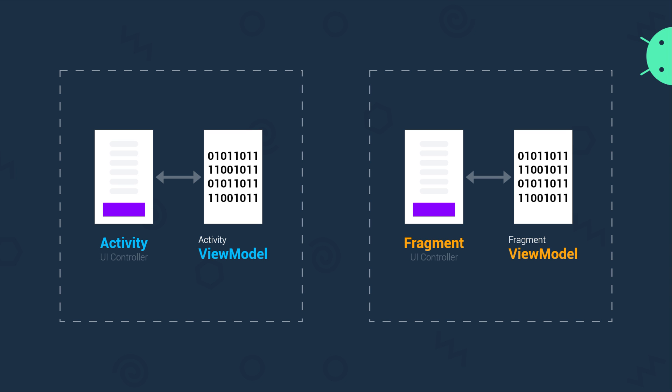In the UI controller there should only be necessary code for managing our UI, and everything else could be placed inside the ViewModel class. So enough theory — let's see some practical examples.